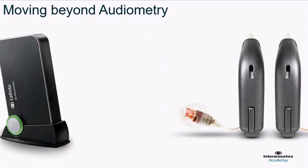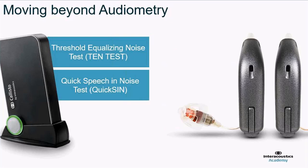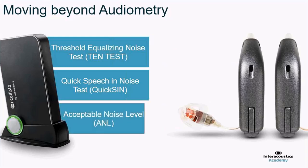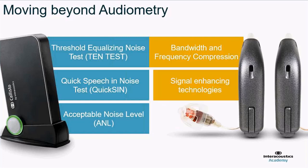So what can we do to improve our amplification choices and hearing aid fitting feature selection? There are three tests popular in the literature: the threshold equalising noise test, the QuickSIN test, and the acceptable noise level test. You can use these to look at different hearing aid features. The TEN test can help you choose hearing aid bandwidth and the frequency compression technique. QuickSIN is centered around signal enhancing technology — based on the score, you can choose whether the patient needs directional microphones or FM systems.